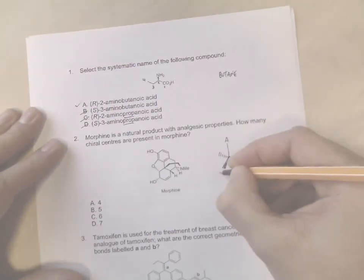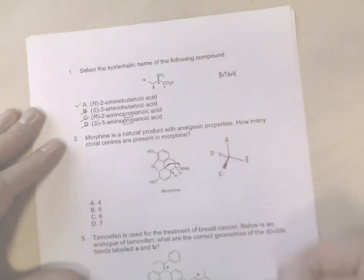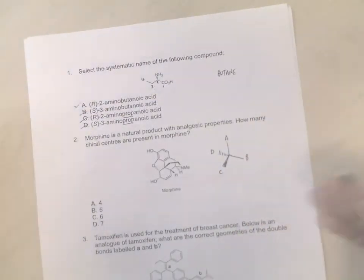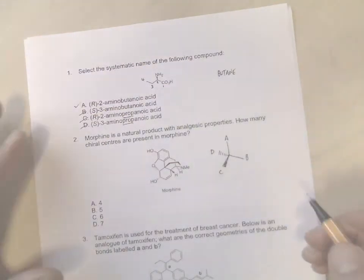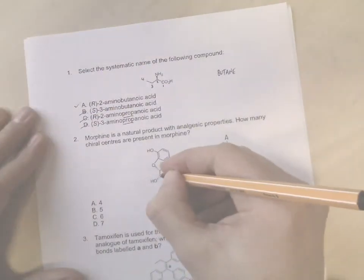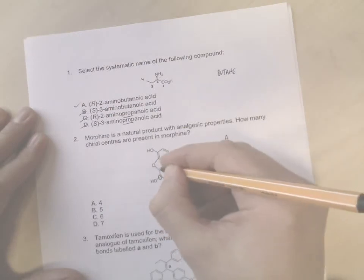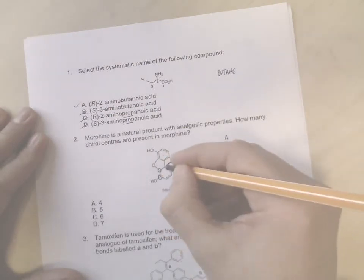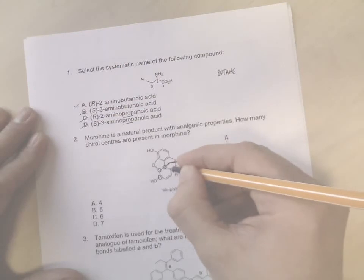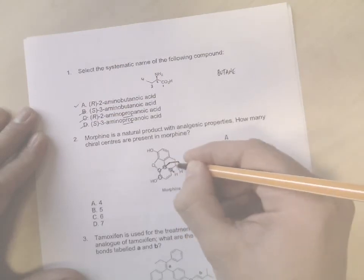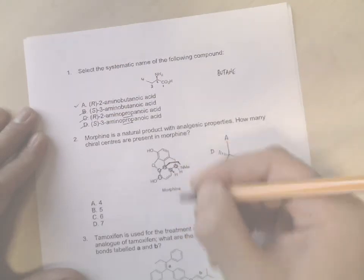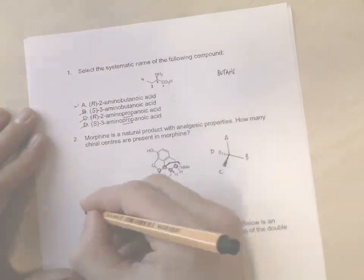So we're really looking for things with four different groups. Remember A is not equal to B is not equal to C is not equal to D. So that would be a chiral center, and usually these are given away by the fact that it has a wedge or a dash on it. So here you would have one, two, three, four, five chiral centers.